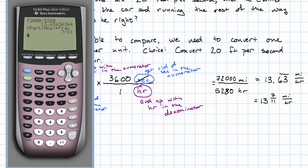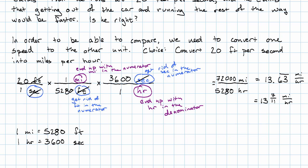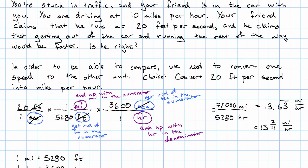So, what were we trying to figure out again? Let's look back at the story. We're stuck in traffic and our friend is bragging that running at 20 feet per second, he can run faster than the car is going. Well, if he really runs at 20 feet per second, that's 13 and 7 elevenths miles per hour. That's faster than 10 miles an hour. If he really runs at 20 feet per second, then yes, he's right.